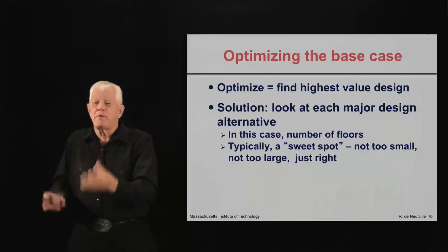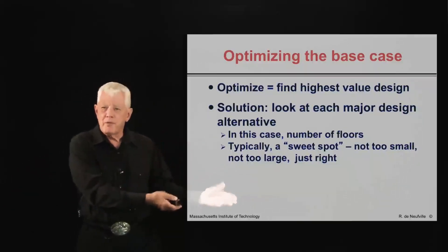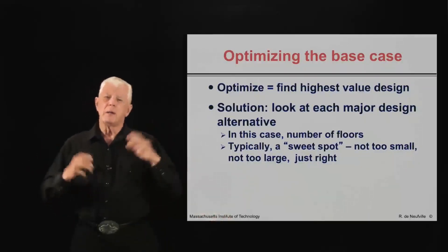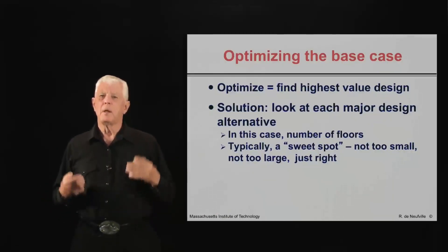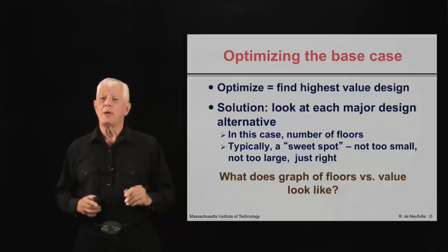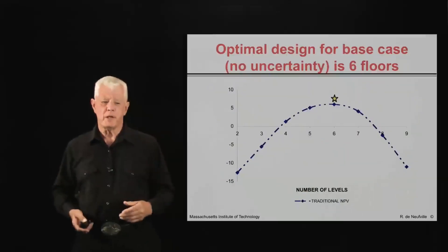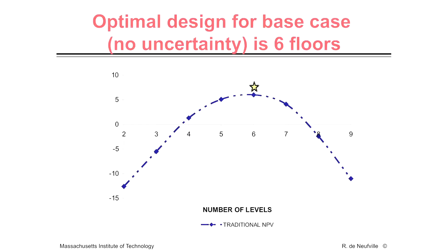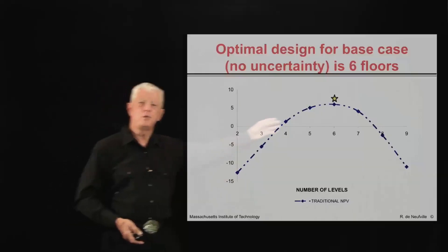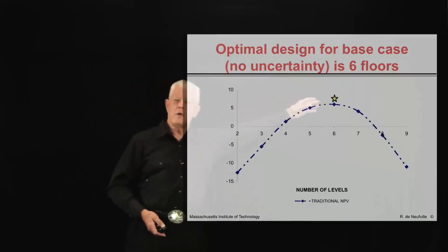Think for a moment what kind of graph that would have — what would it look like? Here is the response: on one side, if it's too small — one or two floors — you have losses. If it's too large, you also have losses because you have a white elephant. Somewhere in the middle, you have a sweet spot.